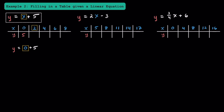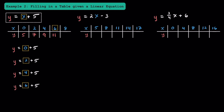Now let's repeat the process when x is equal to 2. Substituting in 2 for x, we get y is equal to 2 plus 5, which equals 7. Substituting in 4 for x, we get y is equal to 4 plus 5, which equals 9. Substituting in 6, we get y is equal to 6 plus 5, which equals 11. And finally, when x is equal to 8, we get y is equal to 8 plus 5, which equals 13. That's how you fill in a table given a linear equation and some x values.